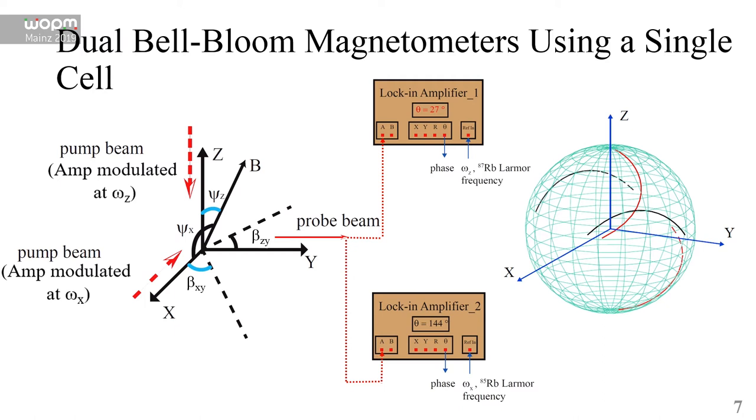Here we applied another pump beam along the X direction and probed by the same probe beam. So here comes the problem: how can we separate the two pump beam signals with the same probe beam?